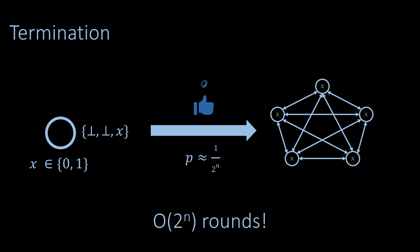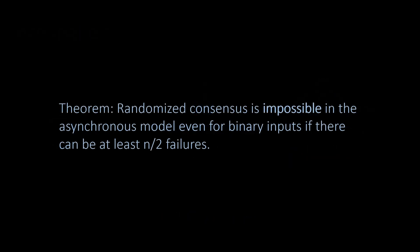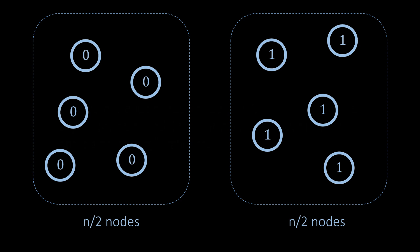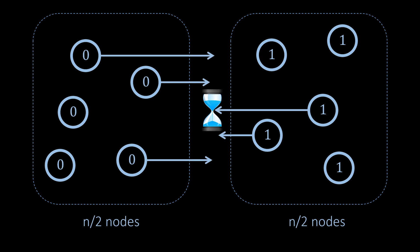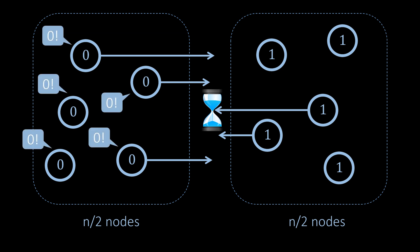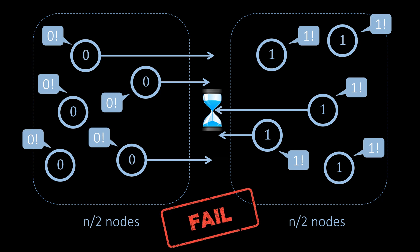Can we do better? The answer is no — our simple algorithm is in fact optimal in this regard. If at least half of all nodes may fail, the consensus problem again cannot be solved. This impossibility result is easy to show: consider the scenario where half of the nodes start with value zero and the other half starts with one. Assume all messages between the two halves are delayed arbitrarily while messages within each half arrive very quickly. Since the first half cannot wait to hear from the other half — as all nodes there may have failed — they must decide independently. Since all their values are zero they must decide zero, otherwise they might violate validity. Similarly the other half must decide one, which violates agreement.